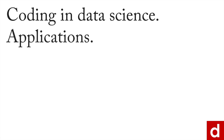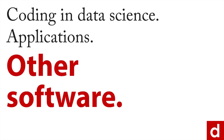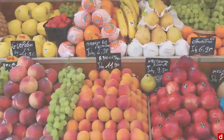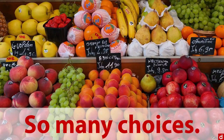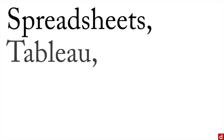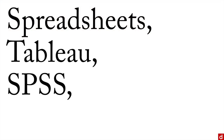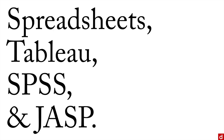Let's finish up our discussion of coding and data science applications by briefly looking at some other software choices. It gets kind of overwhelming because there are just so many choices. This is in addition to the spreadsheets, Tableau, SPSS, and JASP that we've already talked about. I'll give you a range of things I'm aware of — some common choices and some less common but interesting ones.